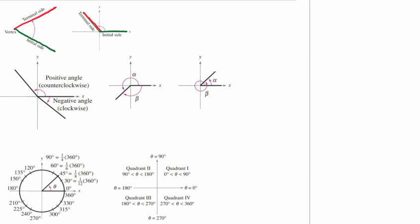So when we move in a counterclockwise manner, this produces a positive angle. And when we move in a clockwise direction, this produces a negative angle.